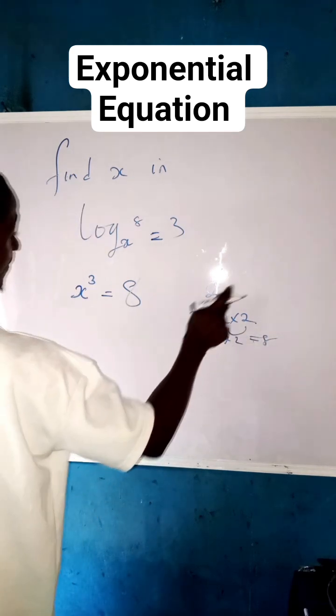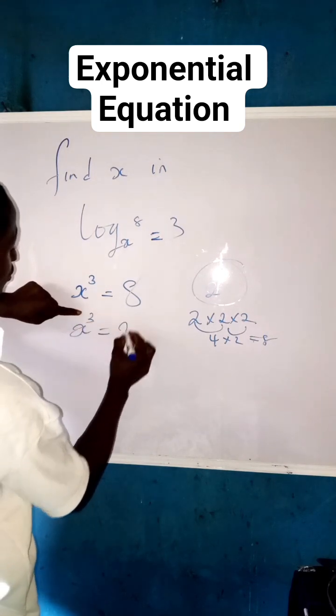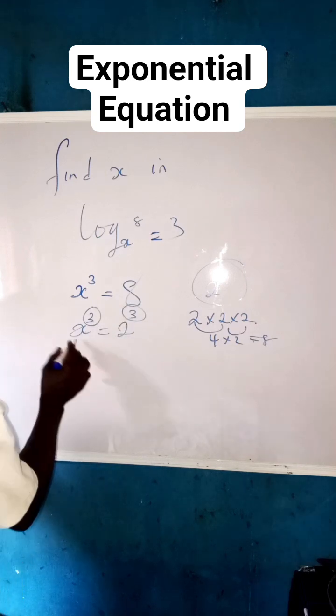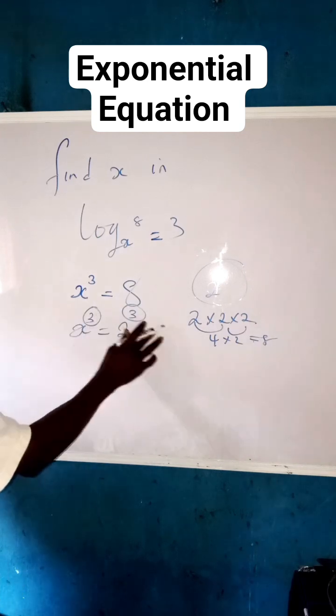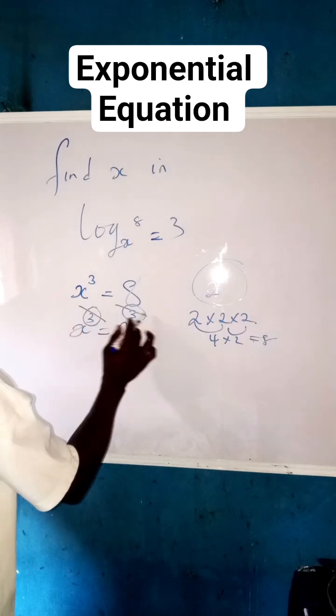So instead of using 8, we use 2 raised to the power of 3. So we're now going to have x cubed equals to 2 raised to the power of 3. We can now see that we're having the same power for different bases. So because of that, we can equate the bases so that we can get the value of x.